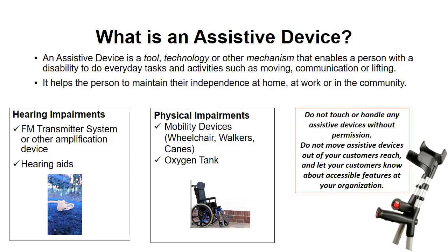What is an assistive device? An assistive device is a tool, technology, or other mechanism that enables a person with a disability to do everyday tasks and activities such as moving, communicating, or lifting. It helps the person to maintain their independence at home, at work, or in the community. Do not touch or handle any assistive devices without permission. Do not move assistive devices out of your customer's reach, and let your customers know about accessible features at your organization.